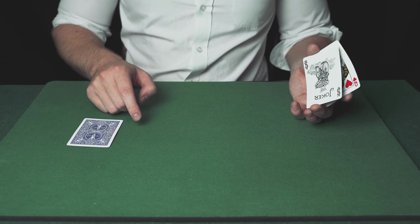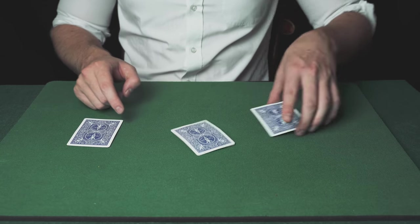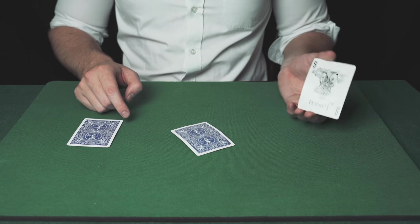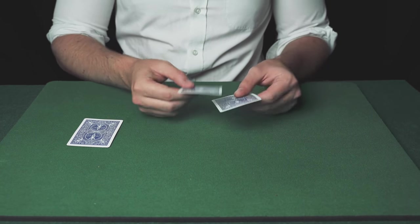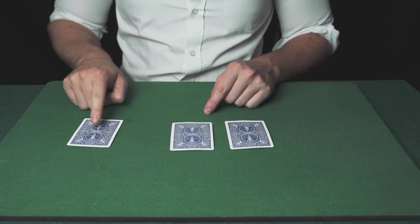Do another false throw to apparently show that you're holding both jokers. Now mix up the cards and the spectator will always get it wrong because they're following the wrong card.